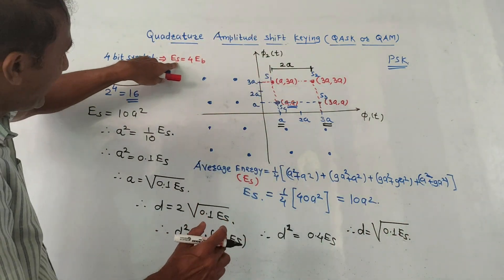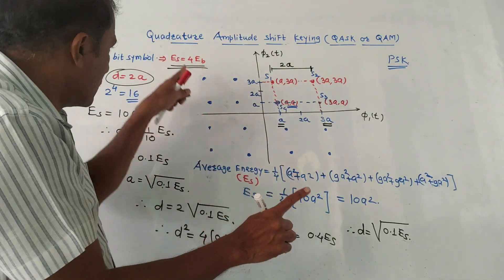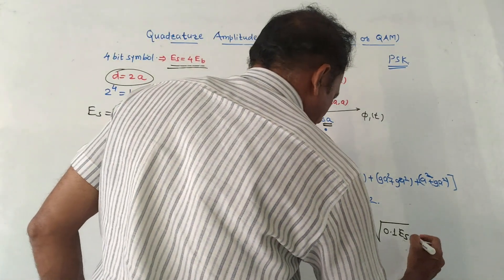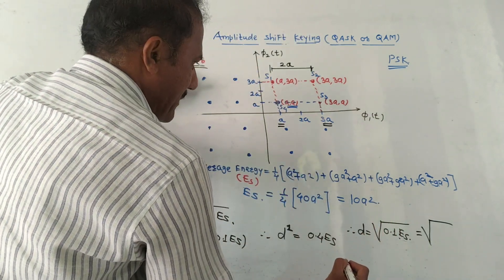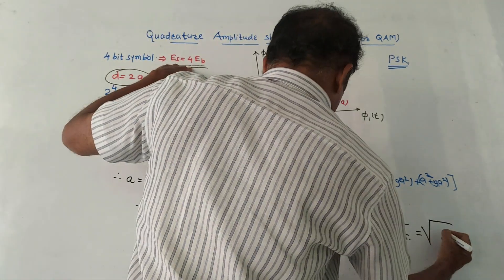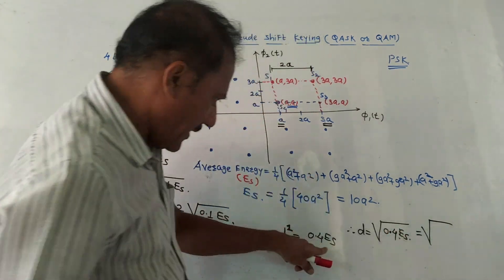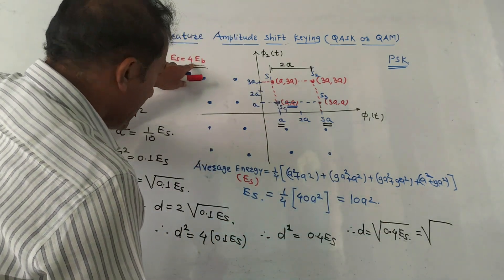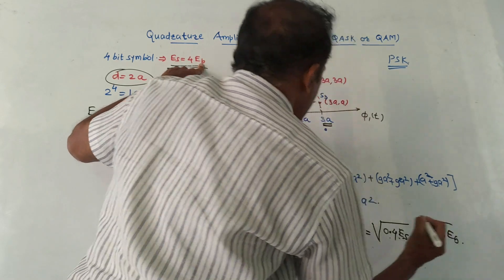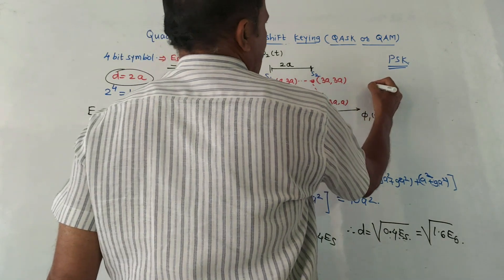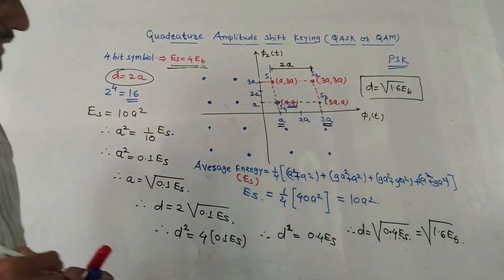Symbol energy Es equals 4 times bit energy Eb, because we are using four bits per symbol. Substituting Es = 4Eb into d² = 0.4 Es gives d² = 0.4 × 4Eb = 1.6 Eb. Therefore the distance between two consecutive points for QASK is d = √(1.6 Eb), where Eb is the bit energy.